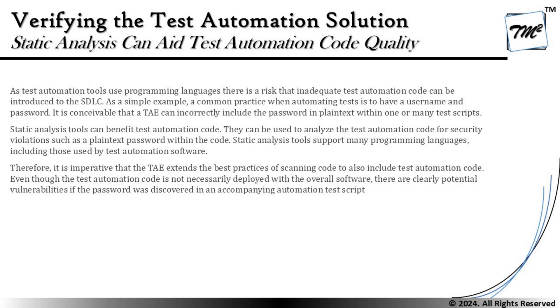A static analysis tool can benefit test automation code by analyzing it for security violations, such as plain-text passwords within the code. Static analysis tools support many programming languages, including those used by test automation software. Just as developers use these tools for programming, test automation engineers writing automation scripts can use the same tools to identify anomalies. Code review anomalies include variables declared but never used, variables used but never declared, infinite loops, insecure coding practices, or variables not cleaning memory — all identifiable through static analysis.